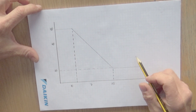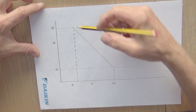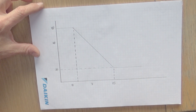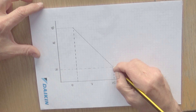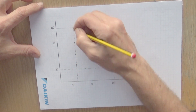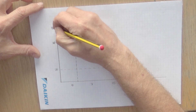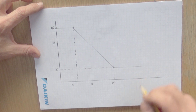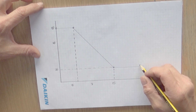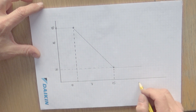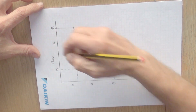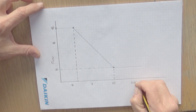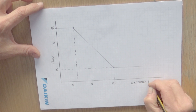I've drawn a very simple graph — it looks like a weather compensation graph that you would find in a boiler manufacturer's installation manual. We've got some points here that we can change, for those familiar with weather compensation. There's an ambient scale along the bottom and a flow temperature scale on the side — so this is outside temperature.